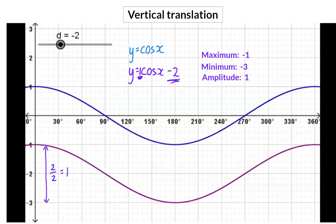And if we divide that by two to determine the amplitude, we also get this value of one. This means that the d value at the end of the equation does not influence the amplitude.